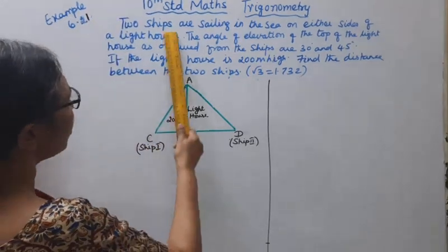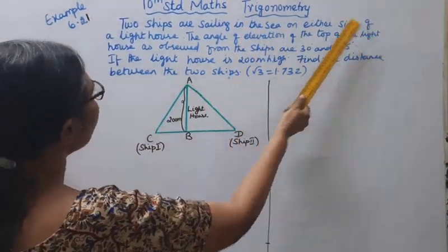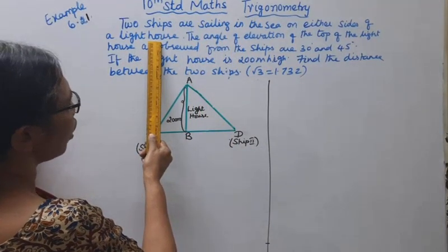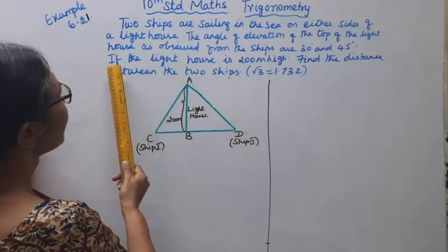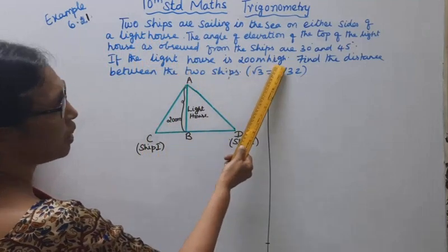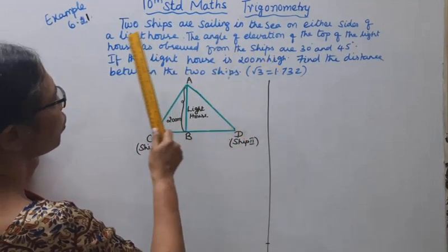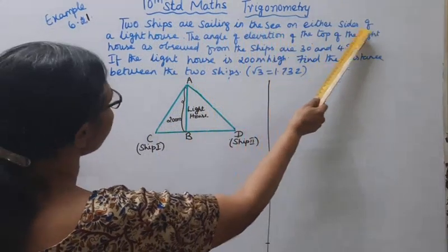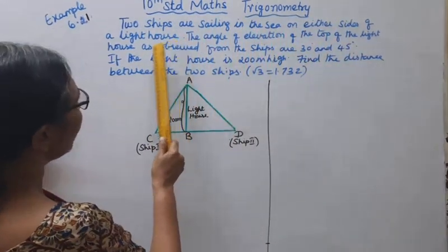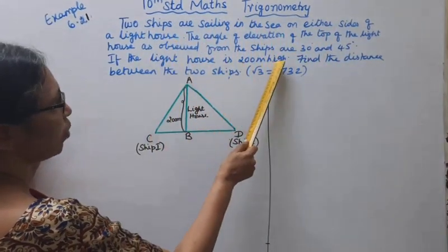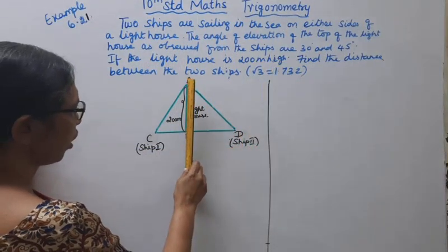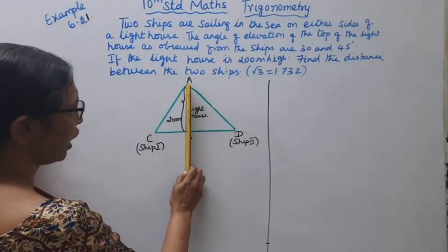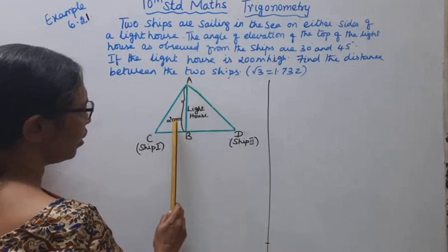Two ships are sailing in the sea on either side of the lighthouse. The lighthouse is 200 meters in height.